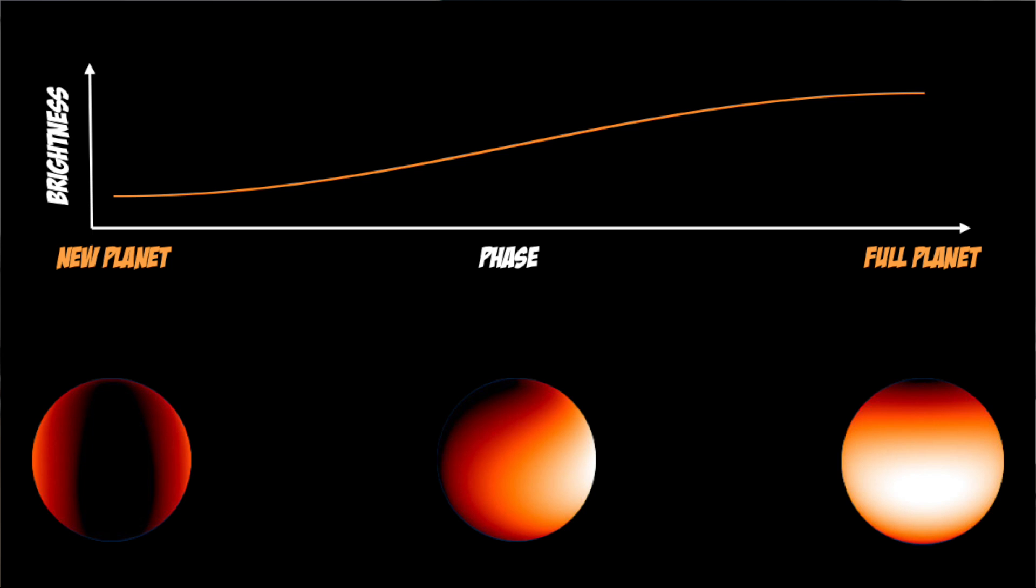To construct a phase curve of an exoplanet, we need to first know its orbital period. Once we know that, we can take the full light curve and fold it on top of each other according to its orbital period.